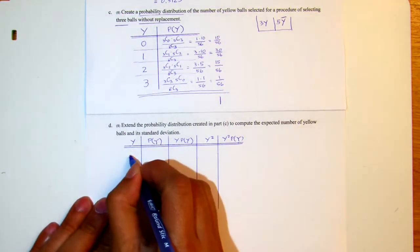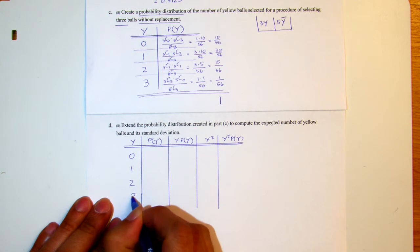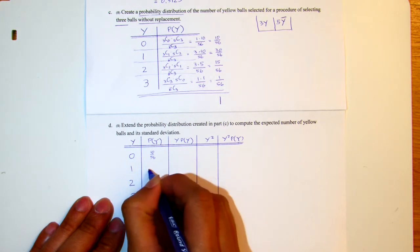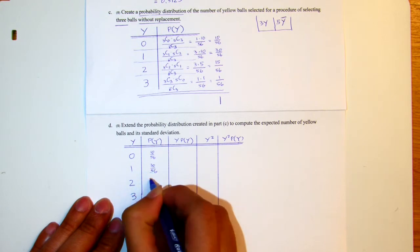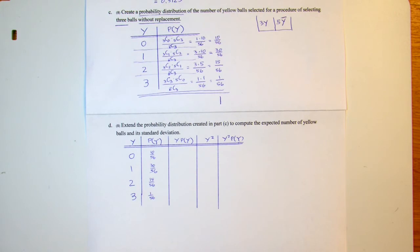So when Y equals 0, 1, 2, 3, the probability for each is 30 over 56 for Y equals 0, 3 over 56 for Y equals 1, 15 over 56 for Y equals 2, and 1 over 56 for Y equals 3.